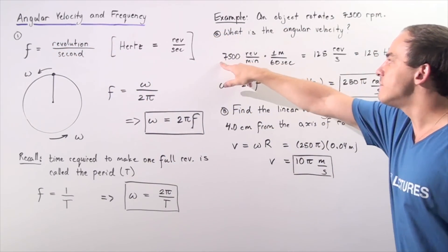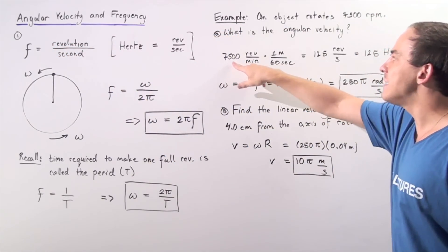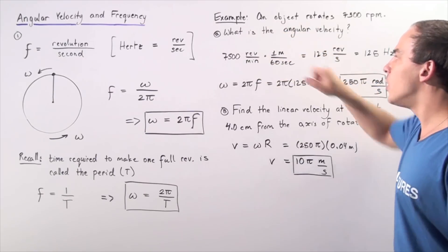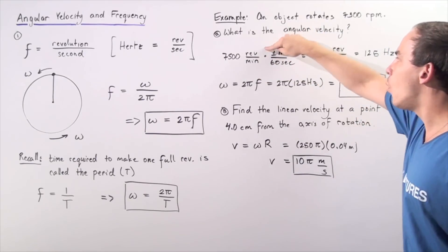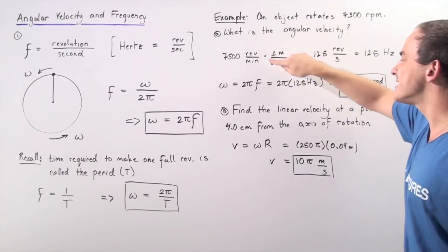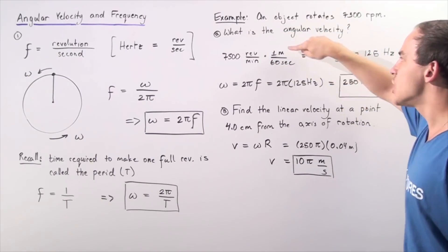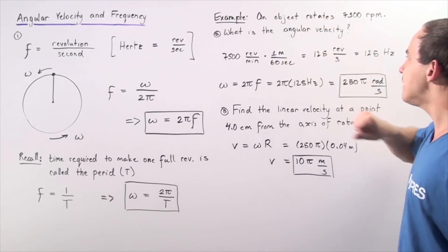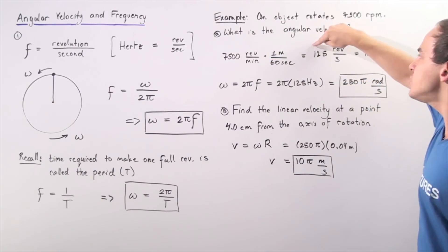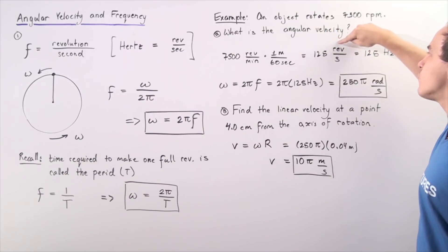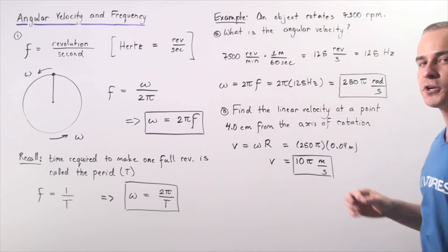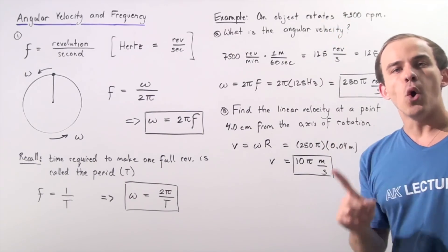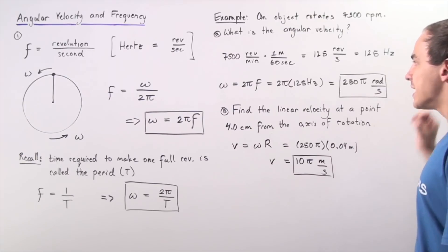We have 7500 revs per minute multiplied by one minute per 60 seconds. The minutes cancel and we're left with 125 revolutions per second, which is known as 125 hertz.